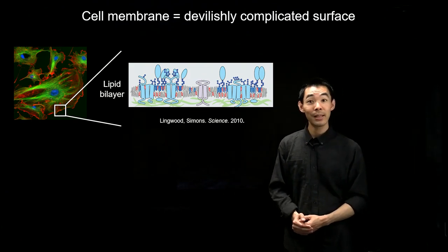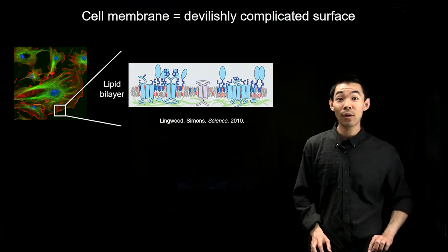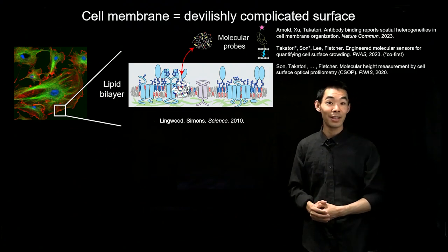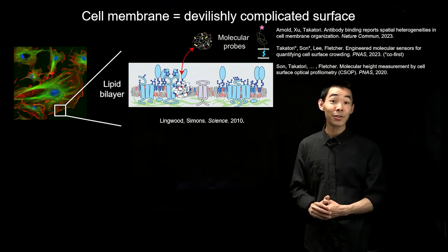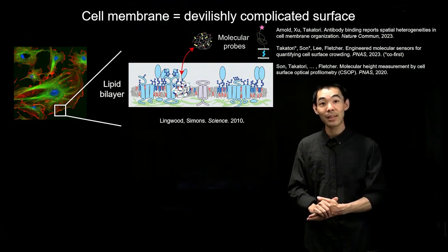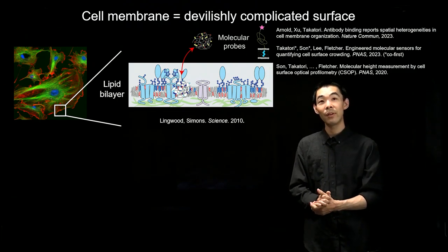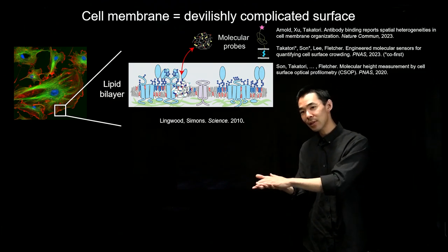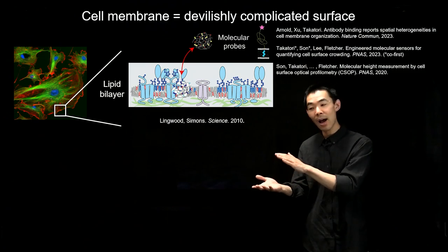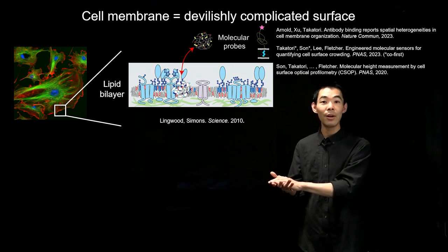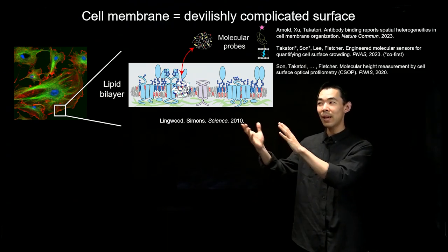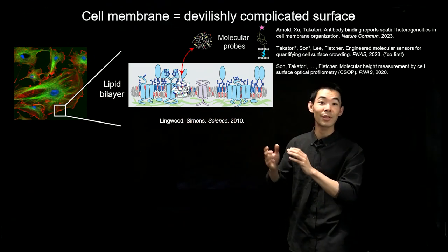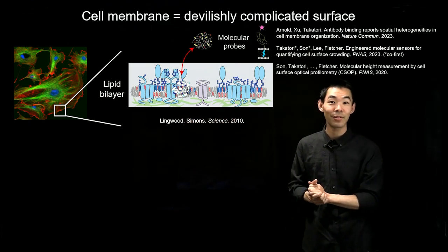A part of my lab has been developing molecular probes to understand the dynamics of the species along the interface. In collaboration with Professor Dan Fletcher's lab at UC Berkeley, we've developed molecular probes, and by understanding how they insert into lipid bilayers and how much inserts, we can begin to understand the spatial and temporal organization of the lipids, proteins, and sugars along this thin membrane.